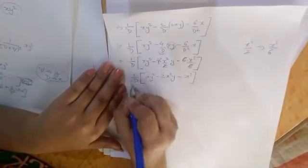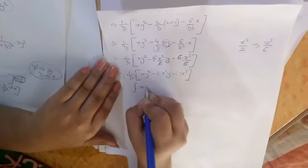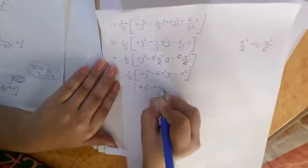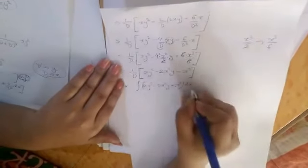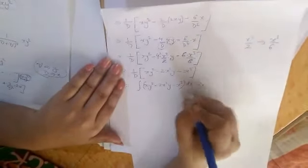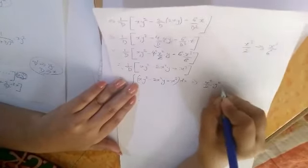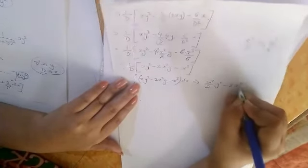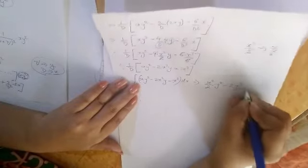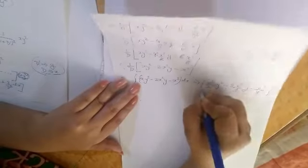Ab is pure term ke saath 1 by D again multiplication mein hai, so that 1 by D will convert into integration sign. Integration of xy² minus 2x²y minus x³ dx. Now solve it. To isko jab hum x ke respect mein integrate karenge, so you will get x²/2 into y², this y² will be as it is, minus 2x²y hai, to x² ho jayega x³/3 into y and minus x to the power 4 by 4.